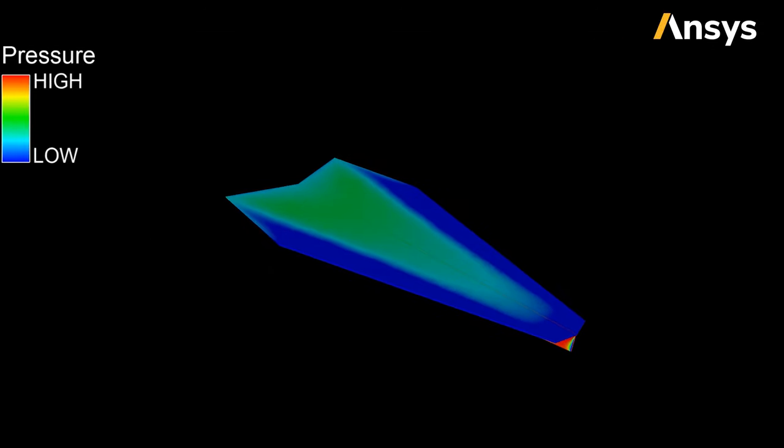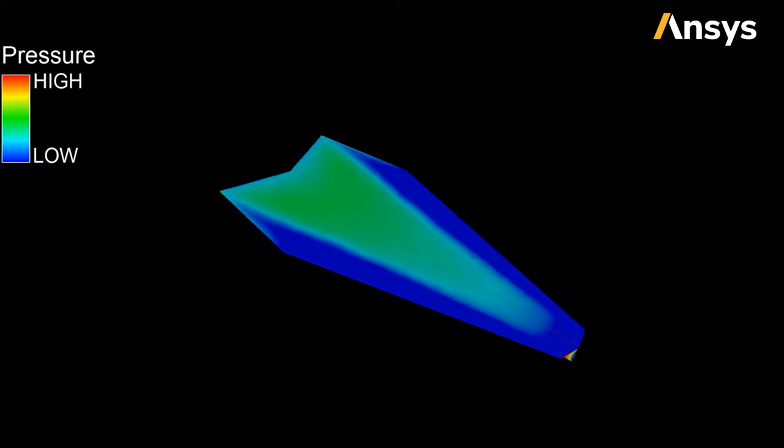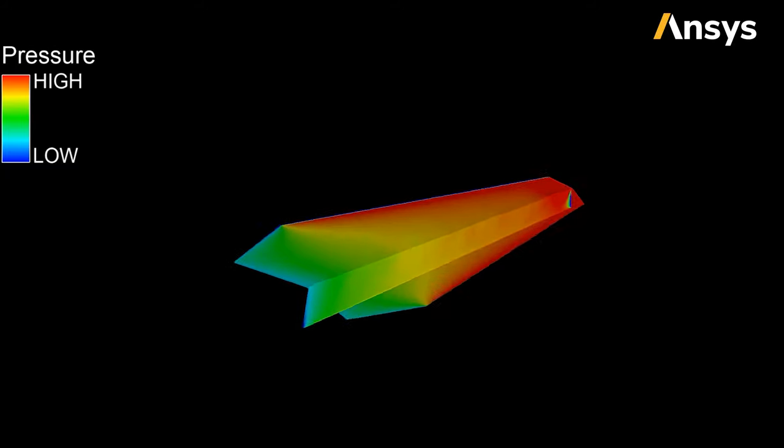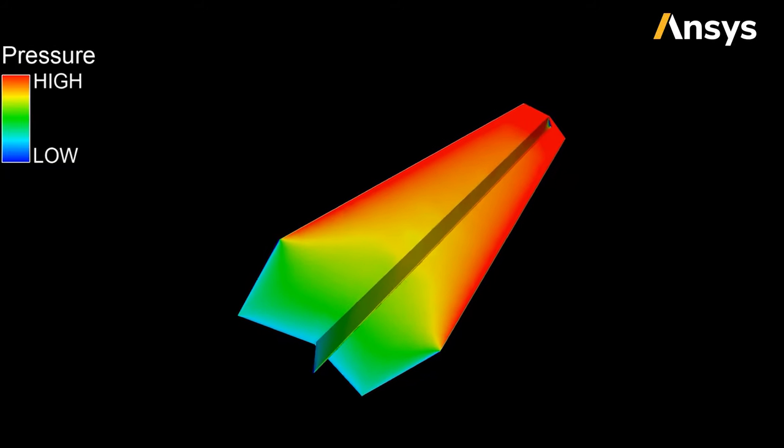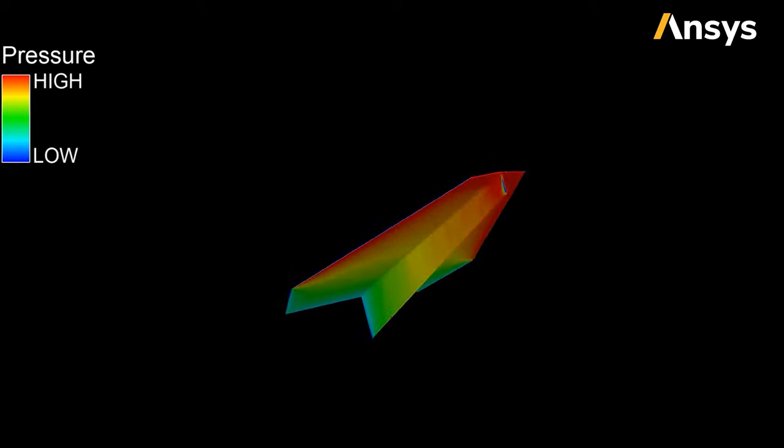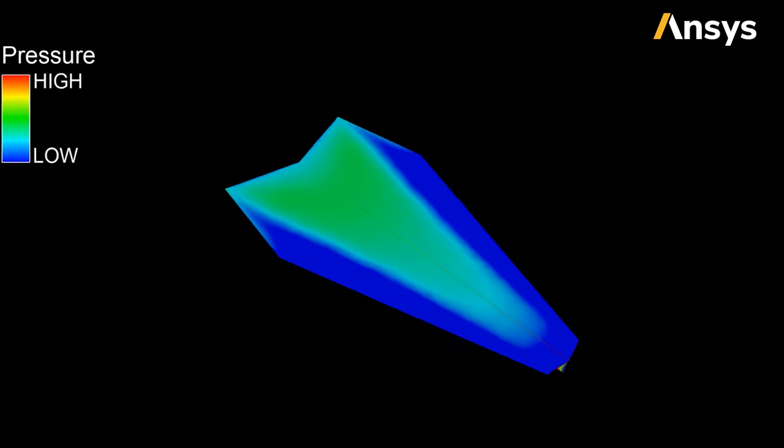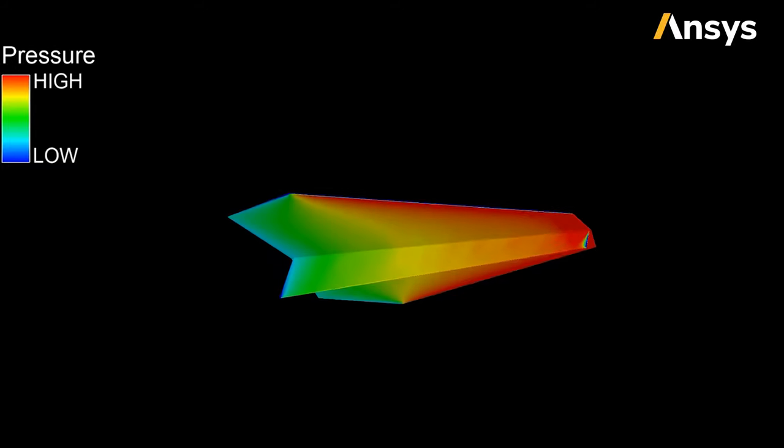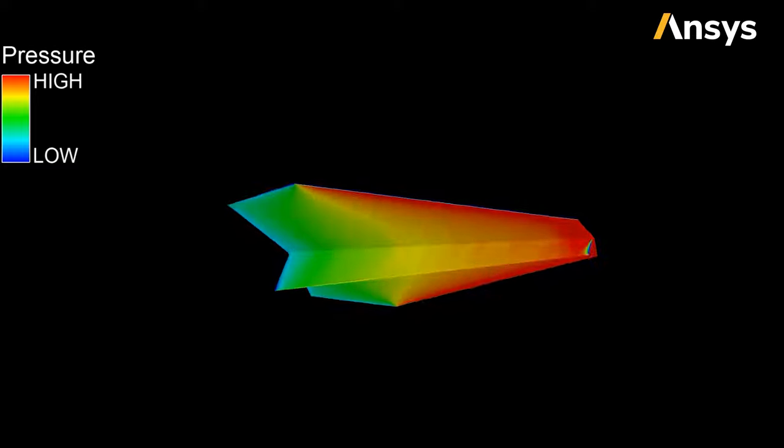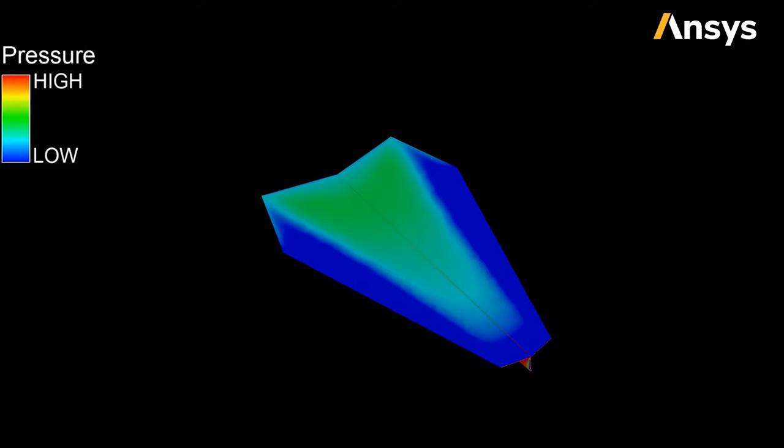This is a pressure map on the surface of the paper plane. The red region means high pressure and the blue region means low pressure. This pressure distribution acting on the top and the bottom of the paper plane creates an effective upward force, the lift.